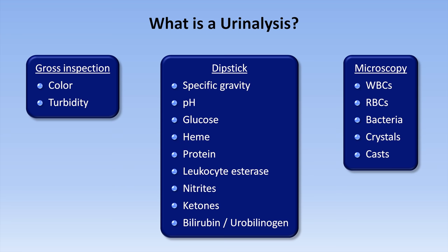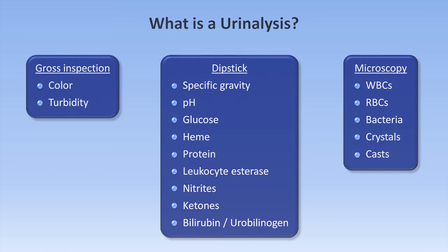For the remainder of this video, I'll be focusing on just the gross inspection of urine. The first characteristic to discuss is the color. You've probably noticed at some point that your own urine color varies from time to time — usually a very light yellow when you've been consuming plenty of liquids, and a very dark yellow or even an amber color at times you've been dehydrated.